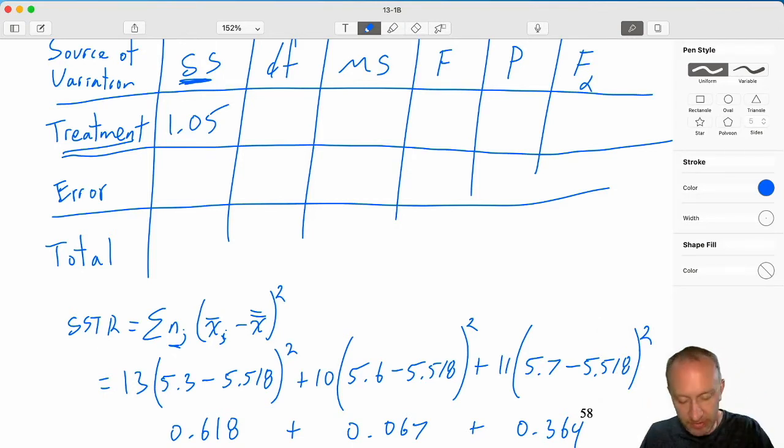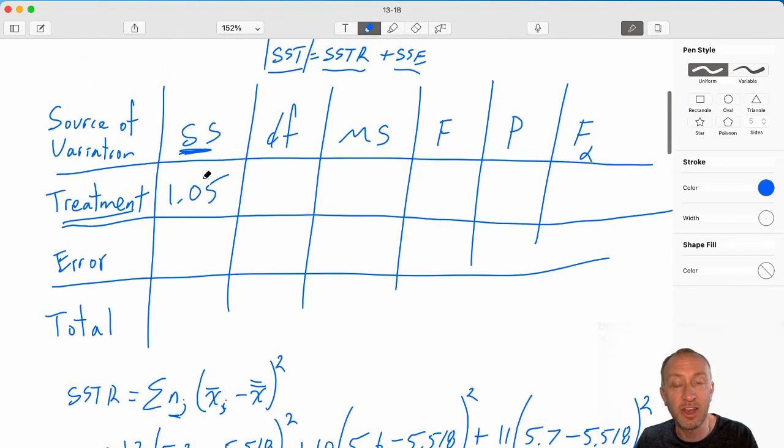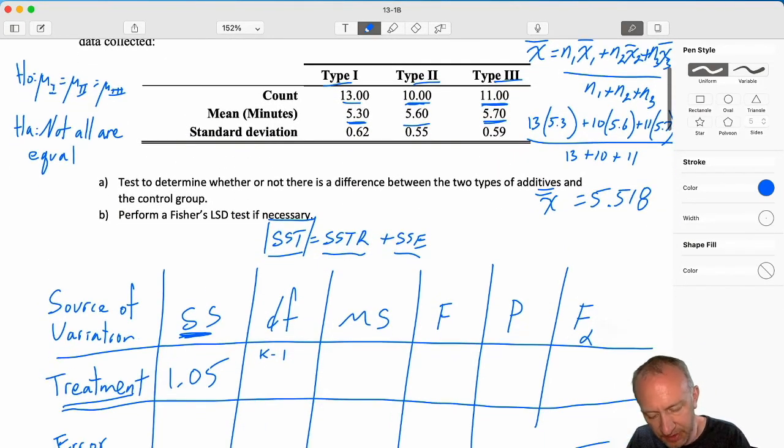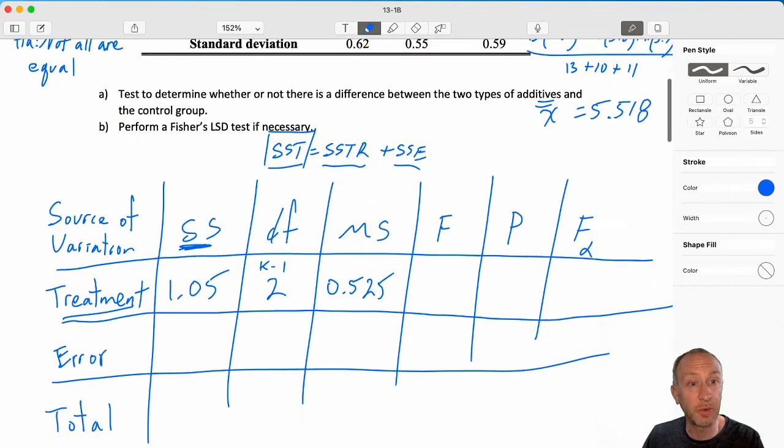So we've got our first square, SSTR, degrees of freedom for SSTR, K minus 1, K being the number of treatments that we have. Once more, I have type 1, 2, and 3. So 3 minus 1 is 2. 1.05 divided by 2 gives me MSTR 0.525.